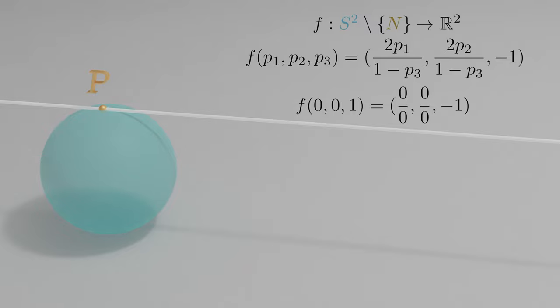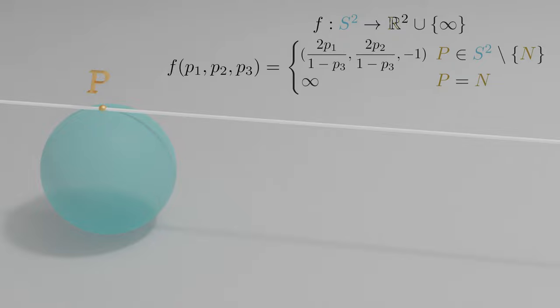This makes the output of the north pole undefined. But, if we want to include the north pole in the domain of this projection, we redefine f as a piecewise function and say that f of p equals the point at infinity when p equals n. Defining f this way produces a map from S2 to our extended plane.